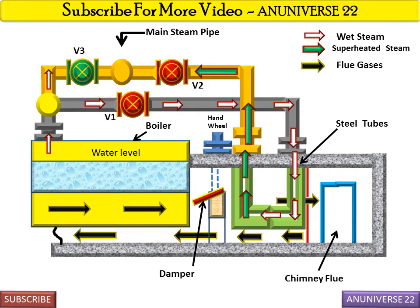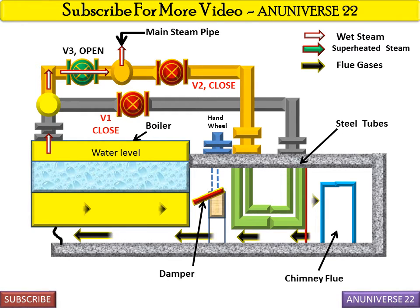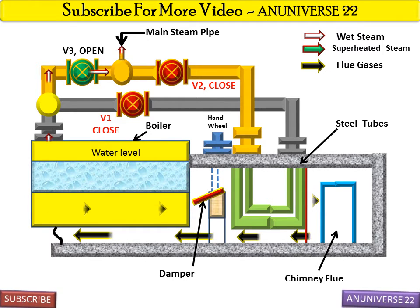Now we can see how the steam pipes may be arranged to pass steam through the superheater or directly to the main steam pipe. If we supply steam from the boiler directly to the main steam pipe, then valve V1 and valve V2 are closed and valve V3 is open. In this case, the wet steam flows and exits through valve V3 directly to the main steam pipe, bypassing the superheater.